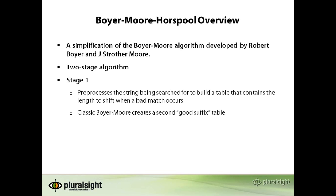The classic Boyer-Moore algorithm generates the bad match table as well. However, it additionally generates a good suffix table. The good suffix table is also used to determine the number of characters that can be skipped when a mismatch occurs. If you are interested in learning more about how this table is built and used, a reference to more information will be provided later.